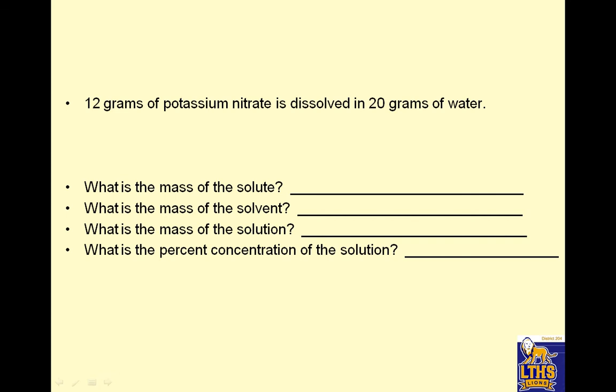12 grams of potassium nitrate are dissolved in 20 grams of water. That 12 grams is the little part, that's the solute. 20 grams of water is the solvent. The solution would be 12 plus 20, which is 32. What's the percent of the solution? It's the little part, solute, over the total, 32. 12 divided by 32 is 0.375. Times 100% means it is 37.5%.